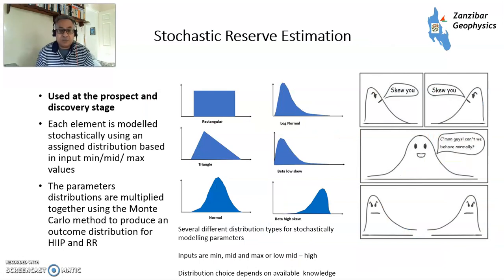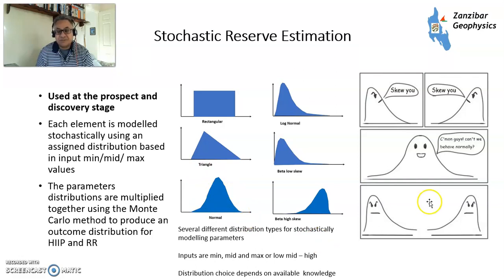When you're in an exploration stage, you tend to do things stochastically — you would put distributions of various parameters: low, mid, and high, with a distribution. You multiply a whole bunch of stochastic parameters with skewed, non-normal distributions. Different people use different parameters.